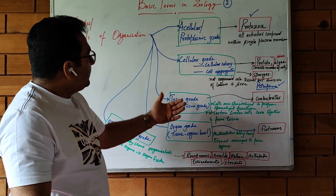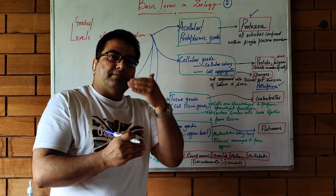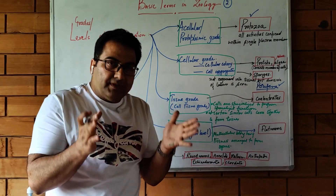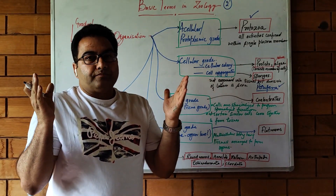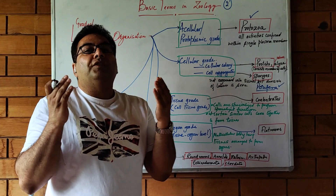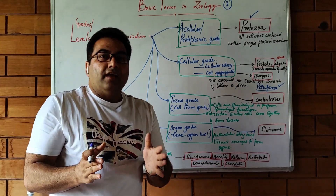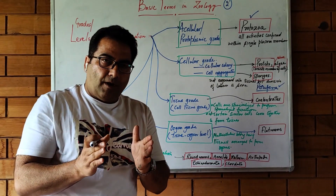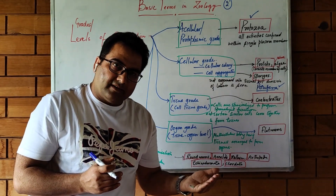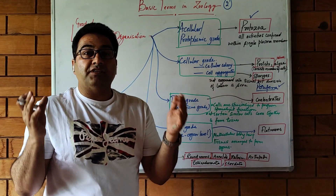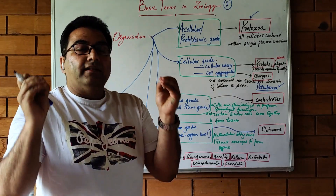Moving to the hierarchy of biological organization: cells form tissues when similar cells performing the same function come together. Similar tissues form organs, organs form organ systems, organ systems form an organism, organisms form a population, populations form a community, and communities together with abiotic factors form an ecosystem. Different ecosystems form the biosphere.